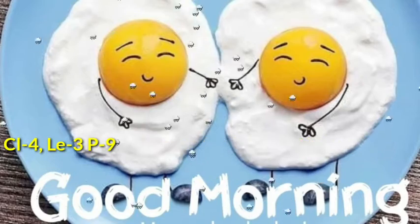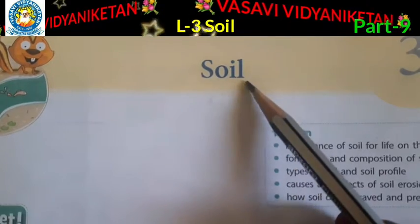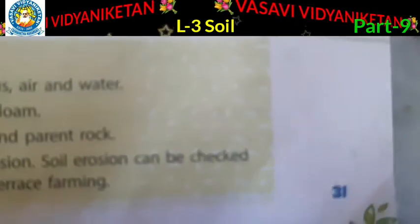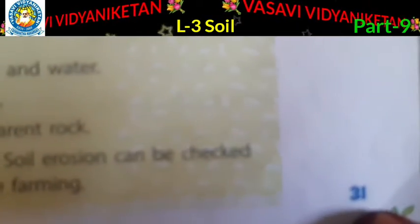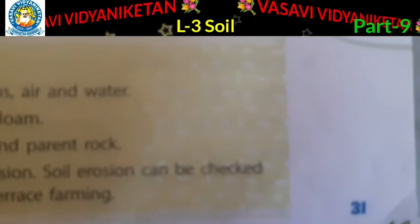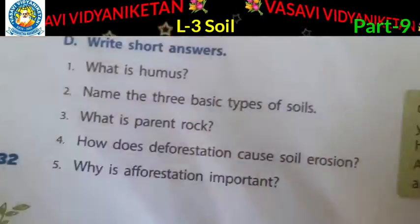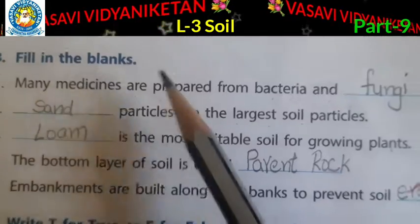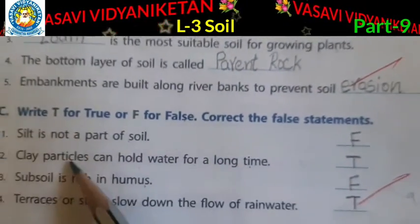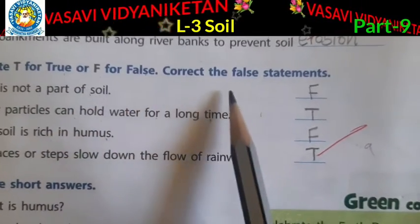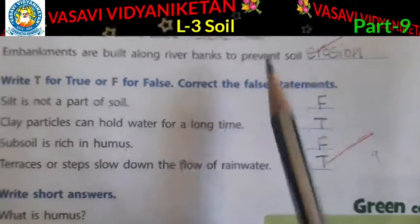What is the name of the lesson? Soil. In this lesson, up to page number 31 we had completed. Today we will learn about page number 32 — Roman B: Fill in the blanks, and write T for true or F for false, and correct the false statements.